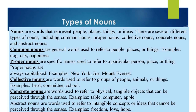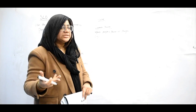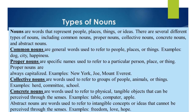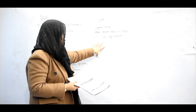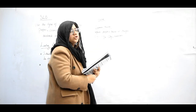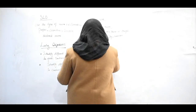For example, common nouns include: dog, city, happiness. As you can see, common nouns reference people, places, or things. Dog, city, and happiness are all called common nouns.